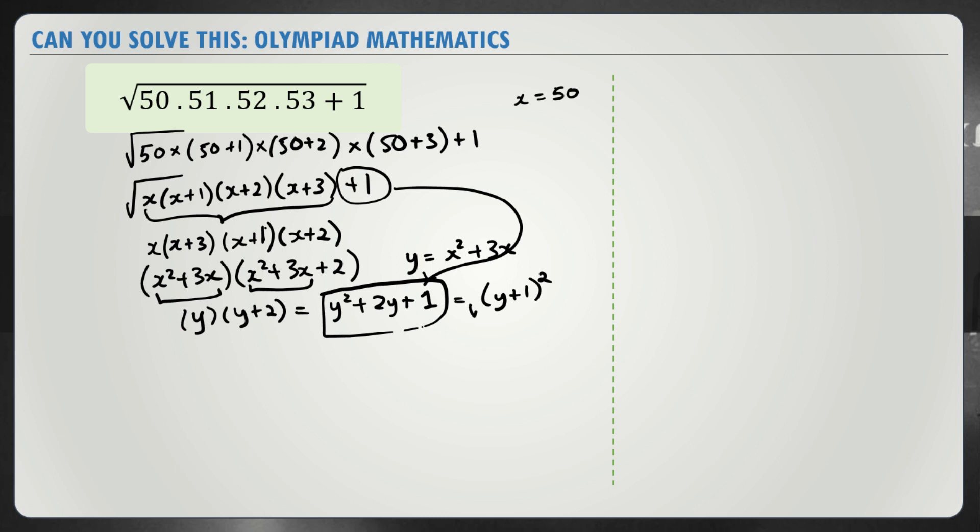So now we have to find the square root of y plus 1 squared, which is simply y plus 1. We know y is x squared plus 3x, so we substitute x squared plus 3x plus 1. And we know that x is equal to 50.